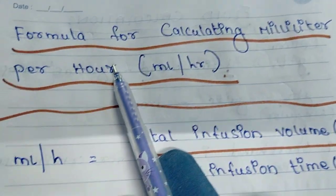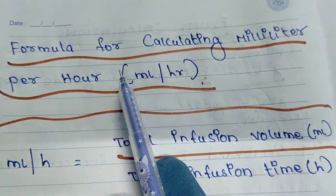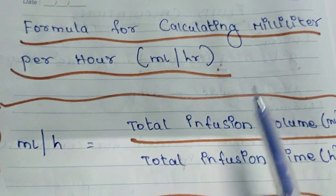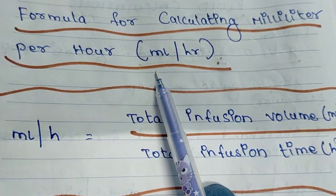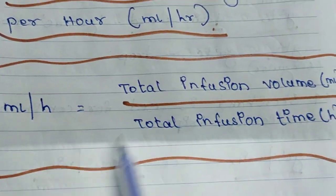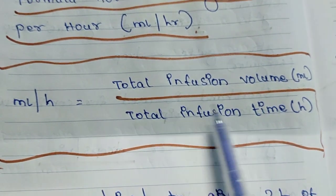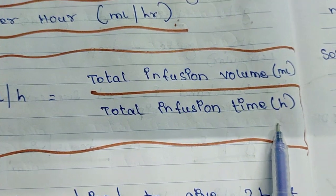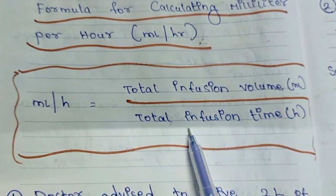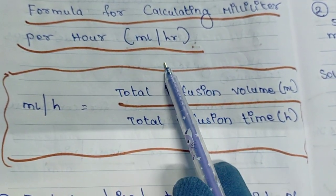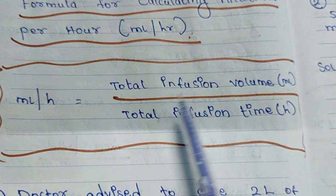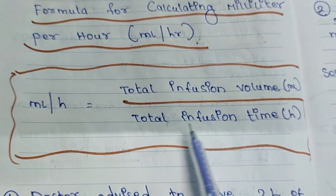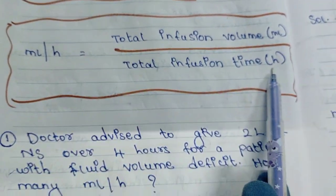First, to calculate ml per hour — ml stands for milliliter. The formula is: total infusion volume in ml divided by total infusion time in hours. This is the formula for finding out ml per hour.